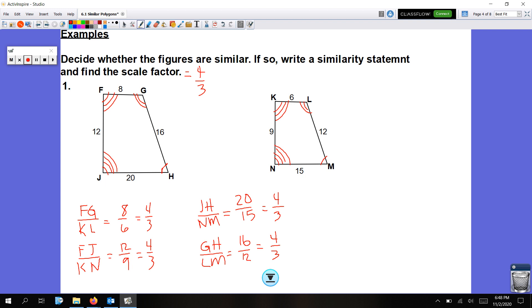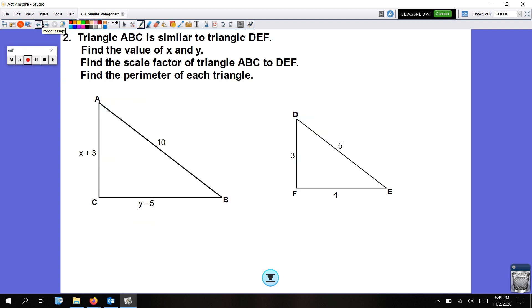Now let's write our similarity statement. So we'll start with the first shape, FJHG is similar. Now it's really important we name the second figure lining up the congruent angles. F corresponds to K, so we would start with K, N, M, L. So FJHG is similar to KNML. And the scale factor was 4 over 3.